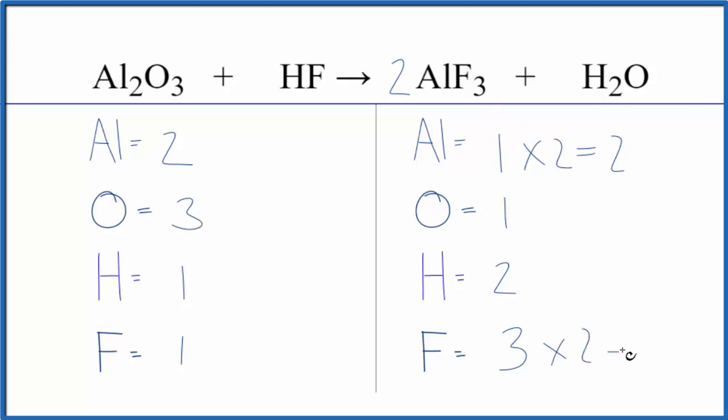3 times 2, that would give us 6. Let's just balance the fluorine next. We could put a 6 in front of the HF. That means we would have 1 times 6. That would give us 6 hydrogens, but we have the 1 times the 6 here. That balances the fluorines.